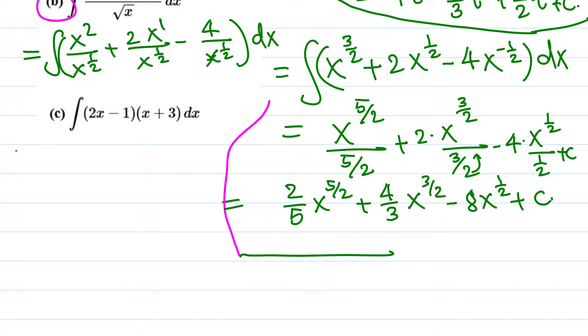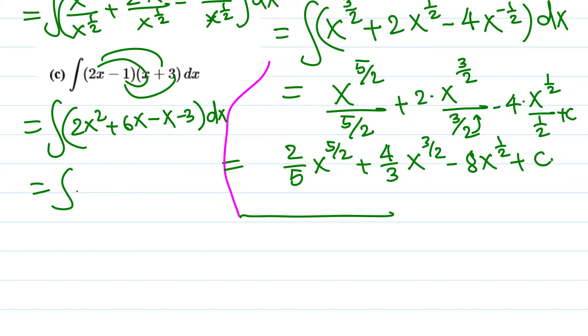Let me multiply these two: integral of (2x² + 6x - x - 3) dx. Now we can combine the middle two terms: 2x² + 5x - 3 dx.